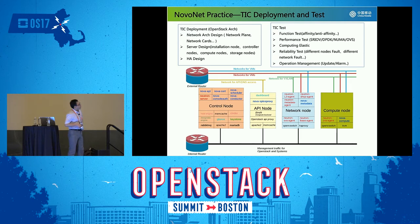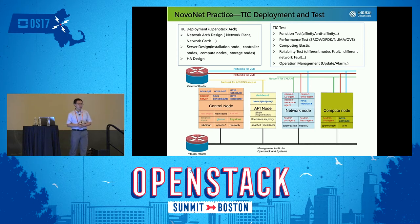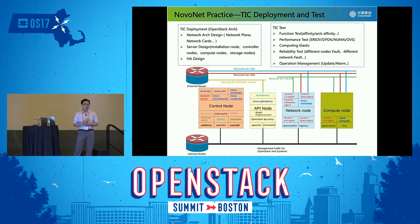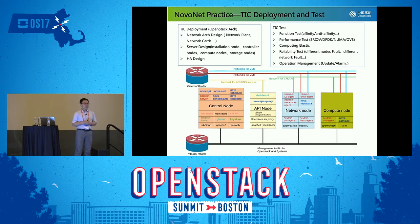Besides the nodes, we have several network planes — the management administrative plane, application network, storage network, and so on. When we do the deployment, first we do network architecture design, then server design, which includes installation nodes, controller nodes, compute nodes, and storage nodes. After that, we do HA design — for example, in the controller node we provide many OpenStack services and we should provide HA solutions for these services.